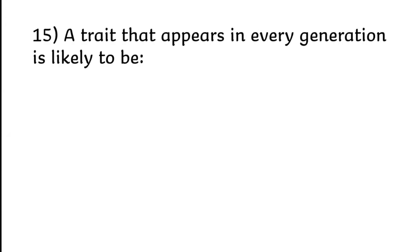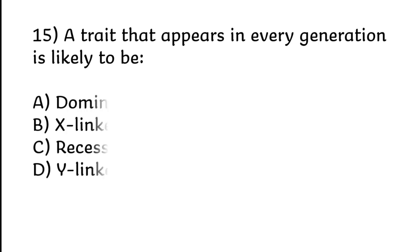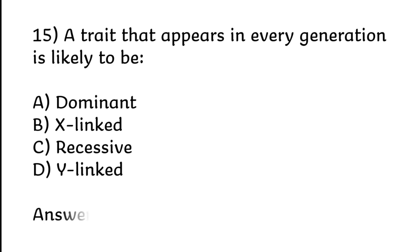A trait that appears in every generation is likely to be: A) Dominant, B) X-linked, C) Recessive, D) Y-linked. Correct answer is option A: Dominant.